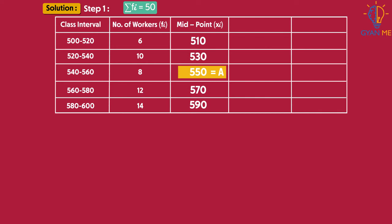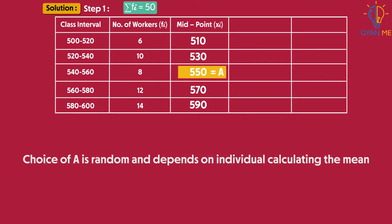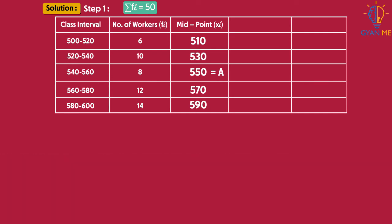Students, note that the choice of assumed mean is totally independent and random. The value of mean that we will obtain at the end of calculation does not depend on the value of assumed mean. The choice of A is random and depends on the individual calculating the mean. Now calculate deviations di by using the formula di equals xi minus A.